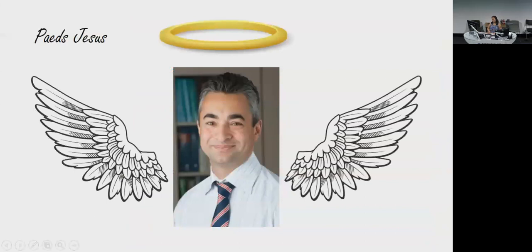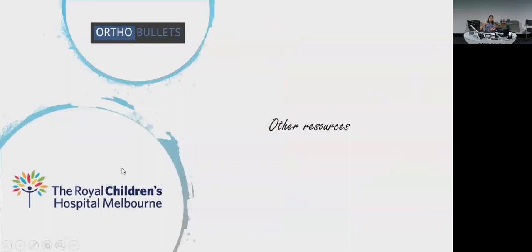There is a document based on Peds Jesus's tutorials, and people have collated all of his keywords from it. If you do not have that, please come and get it from me with a USB today and spread it to your friends, because you need to memorize that document to get 100% on your exam. Other resources you can use are the Royal Children's website, which has really good printout documents to give to families, and Ortho Bullets is a really good one, not just for Peds but for adults as well.